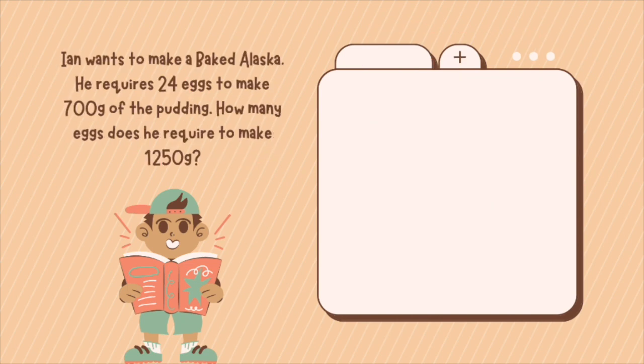Another example. Ian wants to make a baked Alaska. He requires 24 eggs to make 700 grams of the pudding. How many eggs does he require for 1250 grams? So we write it as 24 eggs is to 700 grams that is equal to an unknown egg is to 1250.